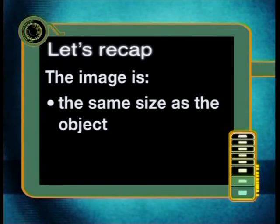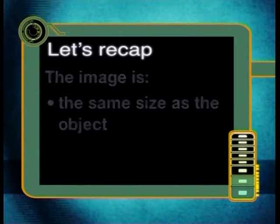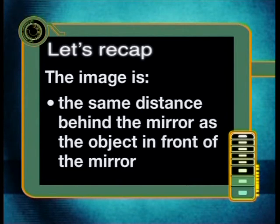This diagram confirms two properties of a mirror image: that a mirror image is the same size as the object being reflected, and that the image is the same distance behind the mirror as the object is in front of the mirror.